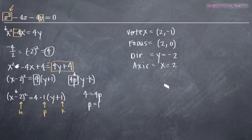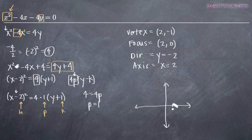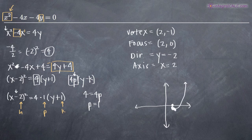Now we can graph the parabola. The vertex is at (2, negative 1), plotted on the graph. The focus is at (2, 0), which is right above the vertex. The parabola opens up because the focus is always inside the parabola.